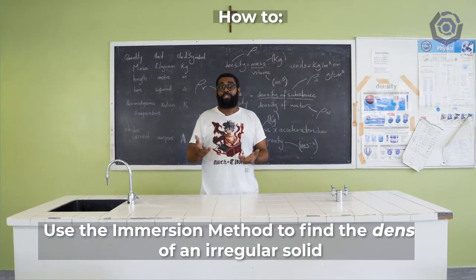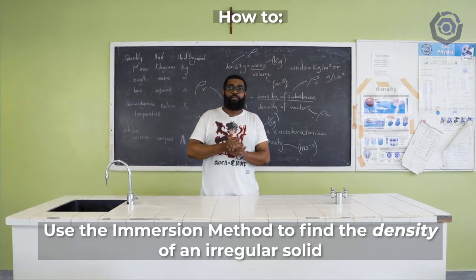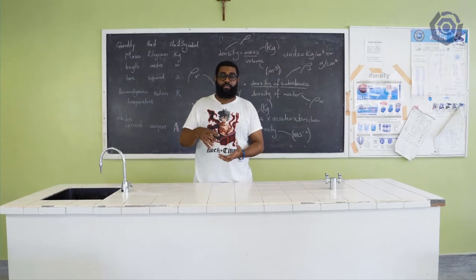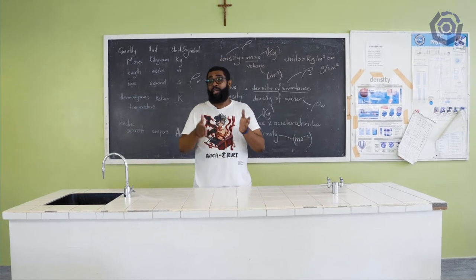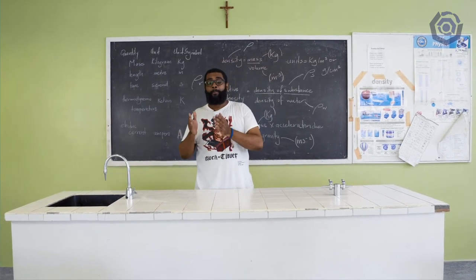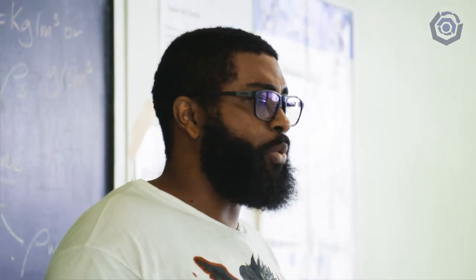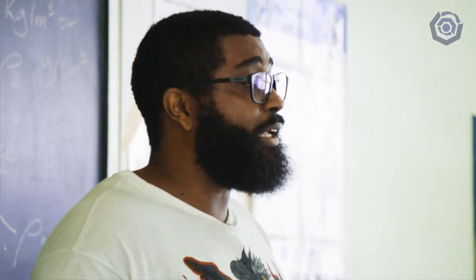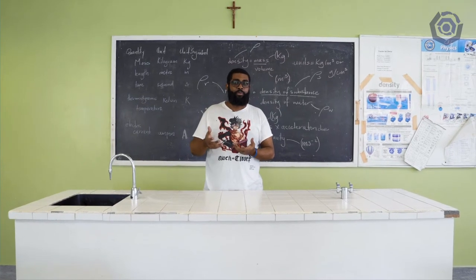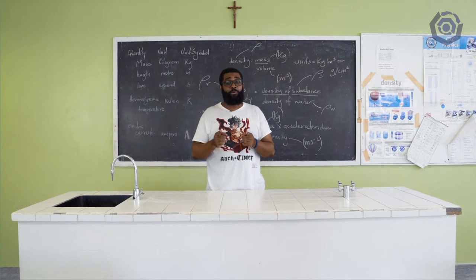In today's lab, we will look at density. We will show you how to use the immersion method to find the density of an irregular solid. If a solid is regular in shape, you can measure its height, length, and width to calculate its volume, then measure its mass on a scale to find its density. But for objects that are irregular in shape — like stones or chunks of play-doh — you can use the immersion method to find their density.